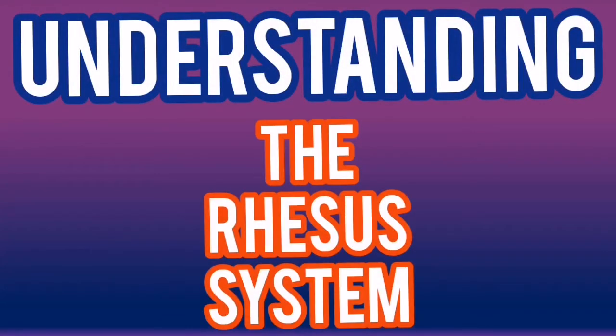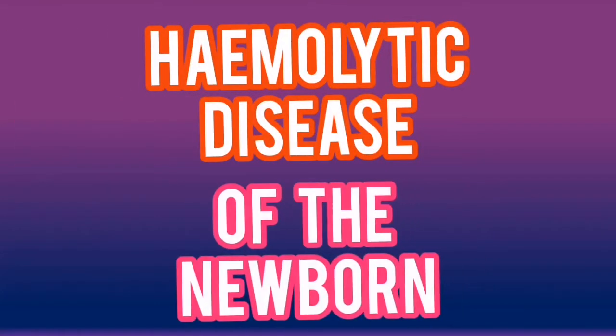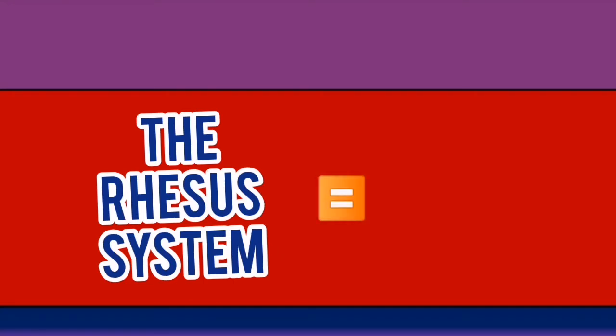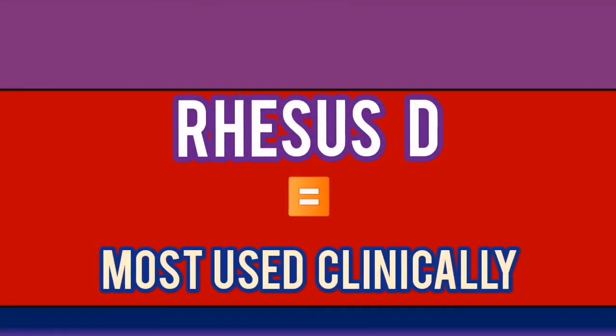Understanding the rhesus blood grouping system is very important as it will help you to understand a very important disease called hemolytic disease of the newborn, which we will also discuss in this video. Just like the ABO blood grouping system, the rhesus blood grouping system refers to the antigens on the surface of the red blood cells. There are many antigens in the rhesus blood grouping system, but the rhesus D antigen is the most used clinically, so we will only be focusing on the rhesus D antigen.